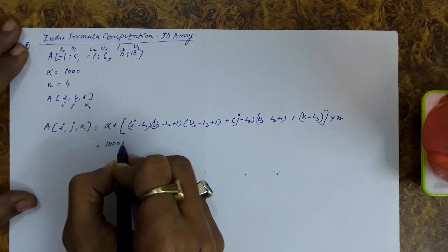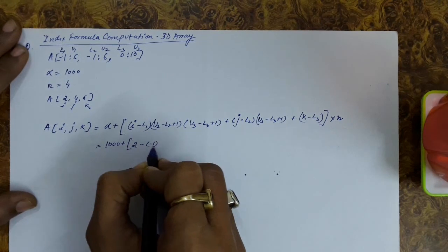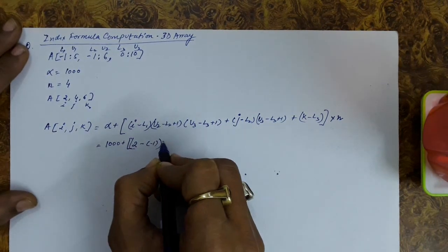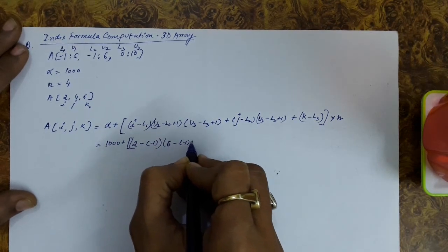So alpha is 1000 plus i is 2 minus lower bound is minus 1, times u2 is 6 minus minus 1 plus 1.